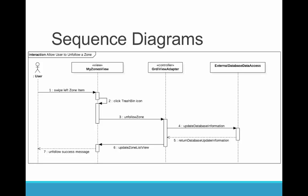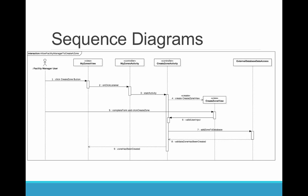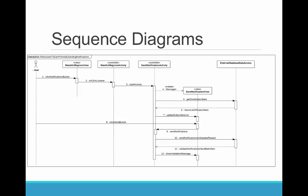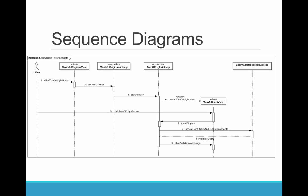The second sequence diagram depicts the interaction of a user unfollowing a zone. First, the user is located in the MyZones view, which contains a grid list of zones he or she is following. The user then swipes left on one of the grid items, which shows a trash bin icon. The user clicks on the trash bin icon, which triggers the controller to unfollow a zone. The controller then communicates with the external database and attempts to update the user's list of followed regions. If the database is updated successfully, the user receives a message that reads 'Successful.'